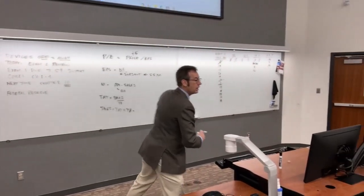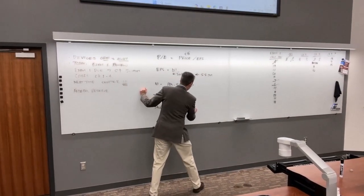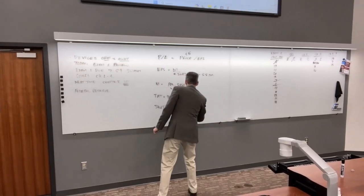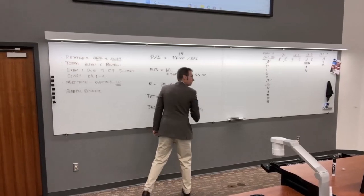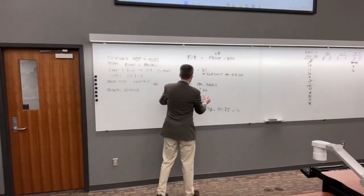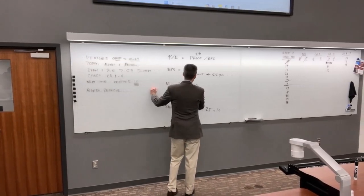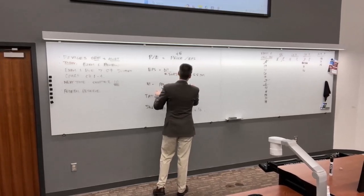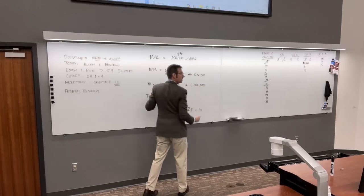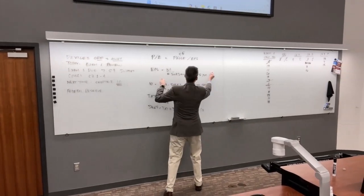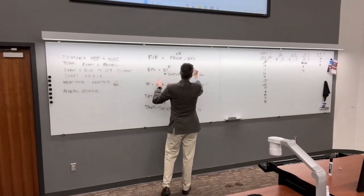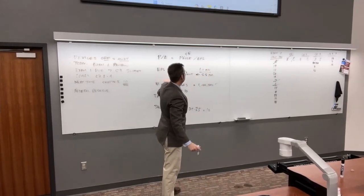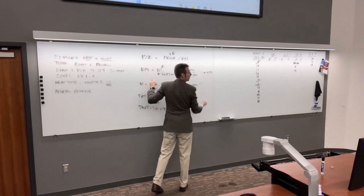So sales equals $10 million. Net income is 0.11 times $10 million equals $1.1 million. Then earnings per share is $1.1 million divided by 5.5 million shares, which gives $0.20 per share. Finally, P/E is $5 divided by $0.20 — that's 25.